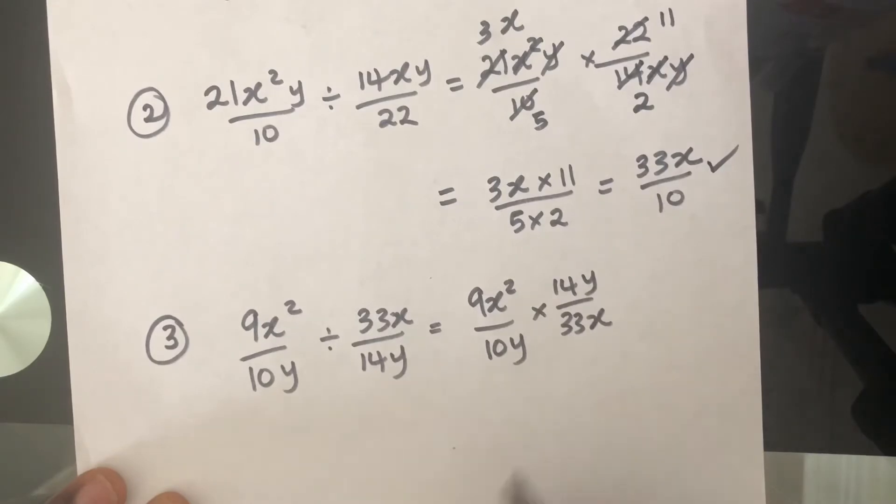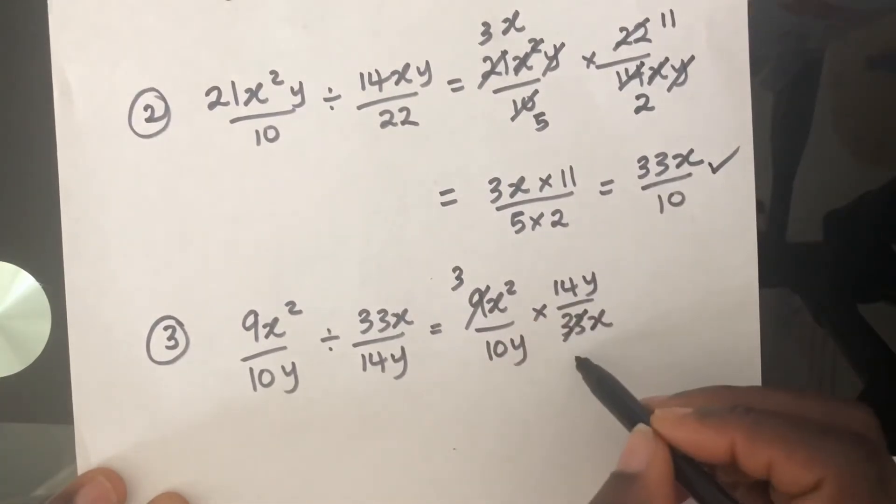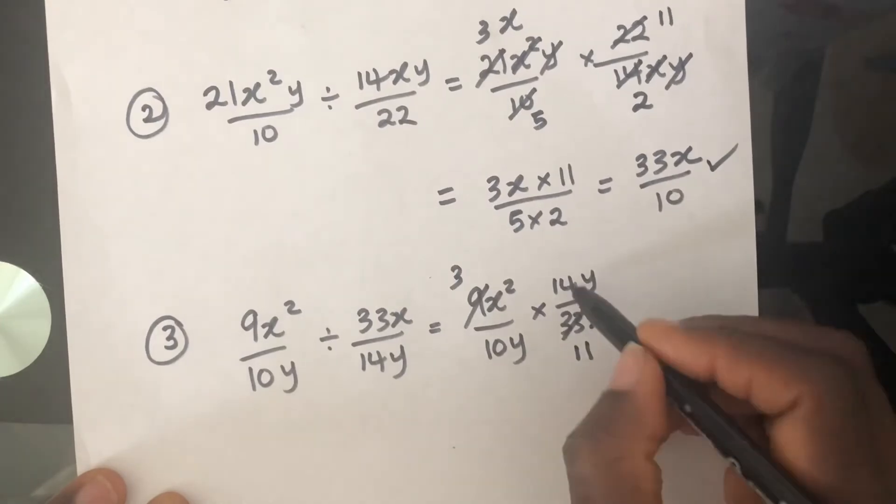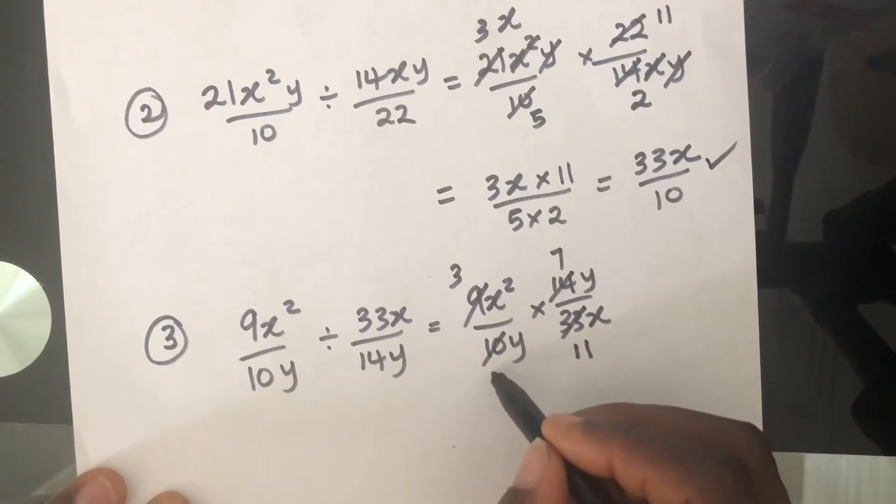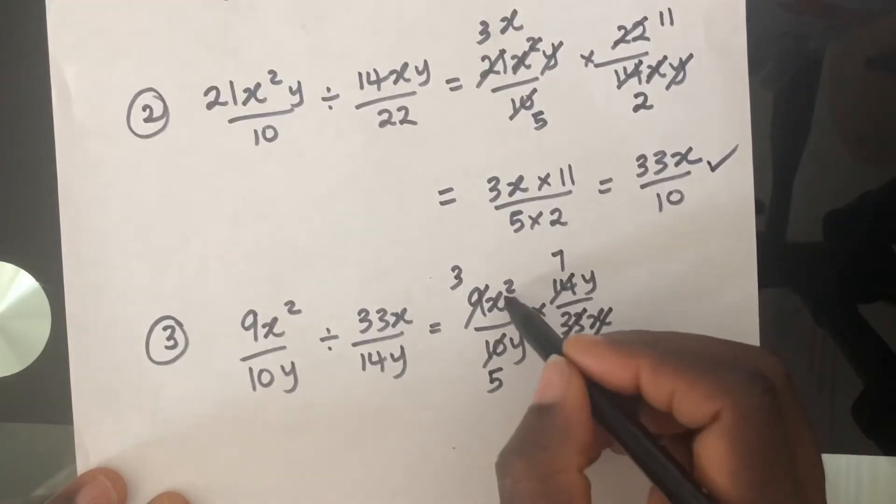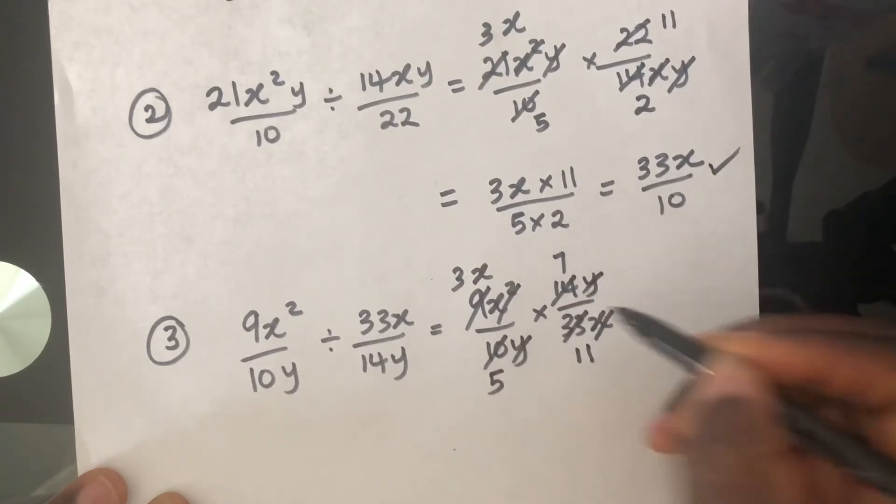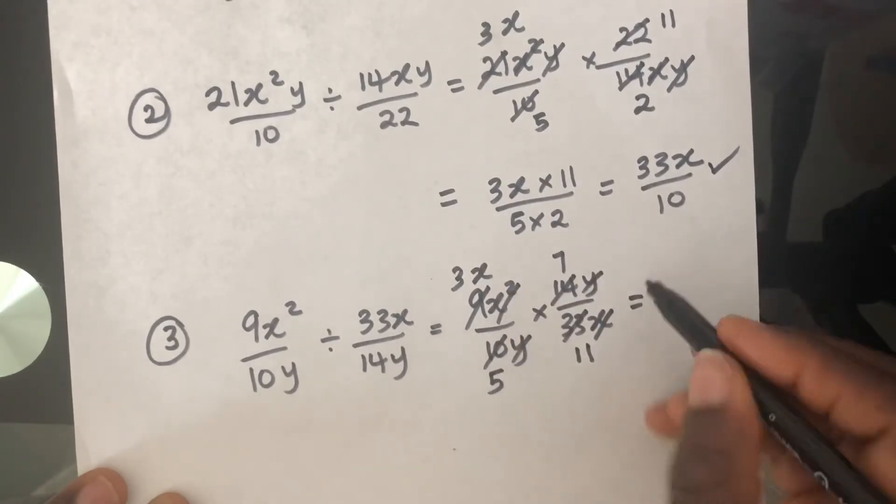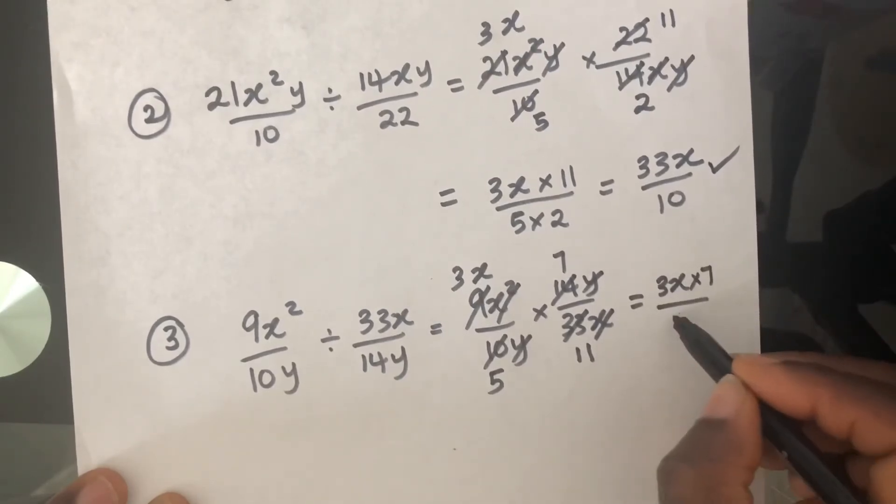There are things that can cancel down. I think 3 can go into 9 three times and 3 can go into 33 eleven times. 2 can go into 14 seven times and 2 can go into 10 five times. We've got 1X here and X squared here. So that would be X left and Y is going to cancel Y.